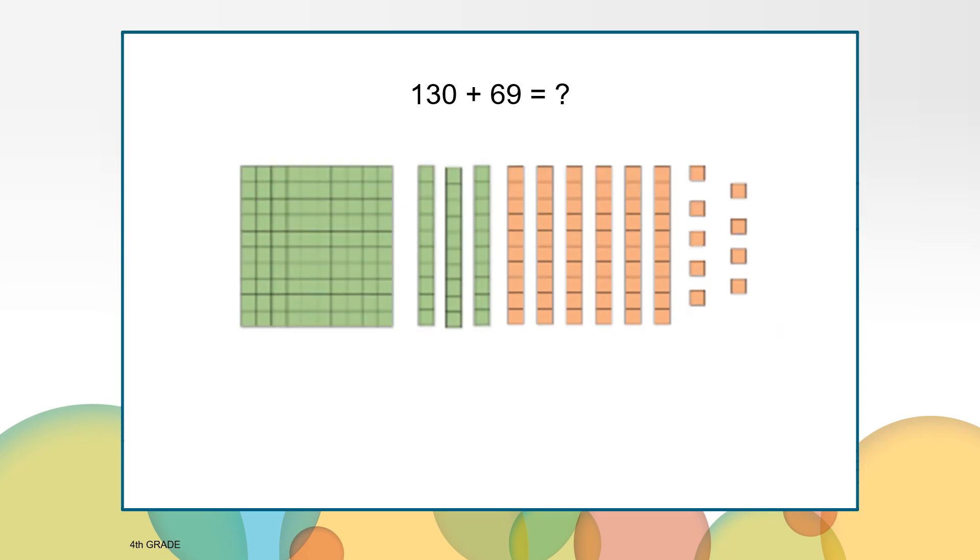We decompose the addends by their place value. Now we can put the parts back together to find the total. I can see the 100 block plus the 30 plus 60 plus 9. So I can put those tens together to make 90. And now I can put all three place values together to see that the total is 199 miles.